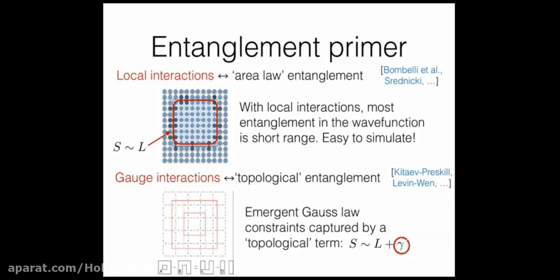Point one: entanglement is closely connected to locality through these area laws. A second thing entanglement connects to is gauge interactions, related to something called topological entanglement. In many-body condensed matter systems, gauge fields can emerge: you start with some spins and no gauge field, just a Hamiltonian, and at low energies the spins can form a spin liquid, associated to an emergent gauge field. The entanglement entropy gives a diagnostic for this emergent gauge field.